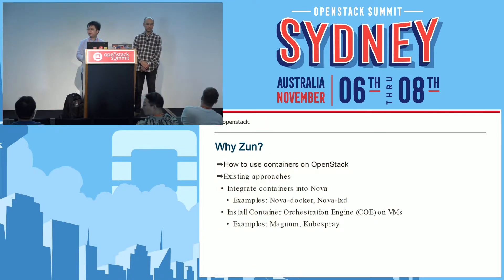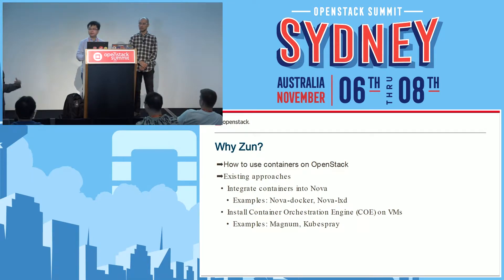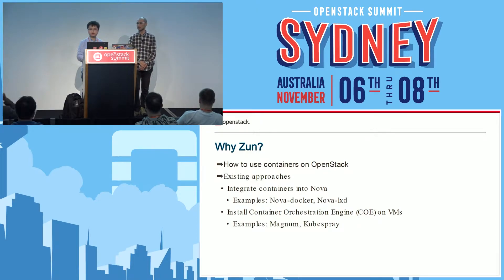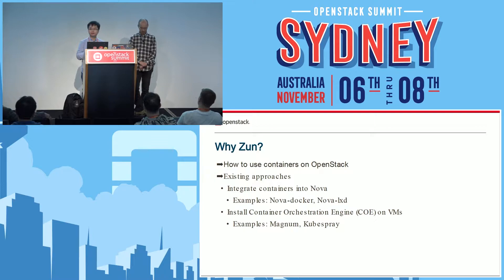We created the Zun project because we saw increased demand for using containers on OpenStack. The general question is: how to use containers on OpenStack? There are two kinds of solutions. The first is to integrate containers with Nova — for example, Nova Docker and Nova LXD. The second approach is to install a container orchestration engine, such as Kubernetes, on top of a set of virtual machines provided by Nova — for example, Magnum and Swarm.